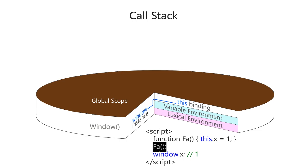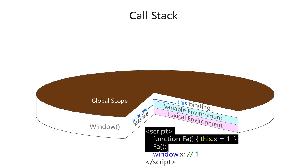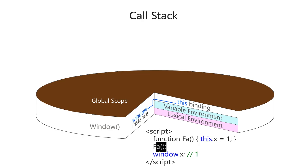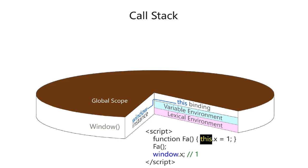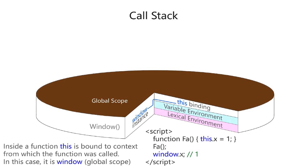Once we run the `fa` function, because we're calling it from the global scope, the `this` object inside this function will actually equal the global scope object. This is why after we run this function and try to output `x` on the window object, we'll get 1 — the same value we set — because `this` inside a function called from the global scope will be bound to the global scope or window object, not the function itself. In other words, inside a function, `this` is bound to the context from which the function was called — in this case, the window or global scope.